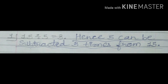Number one: 15 divided by 5 is equal to 3. This means if we divide 15 by 5 the answer is 3. Hence, 5 can be subtracted 3 times from 15. This means we can subtract 5 from 15 three times. So we write 5, then how many times to subtract — 3 times — and from which number — 15. So at the end comes 15.